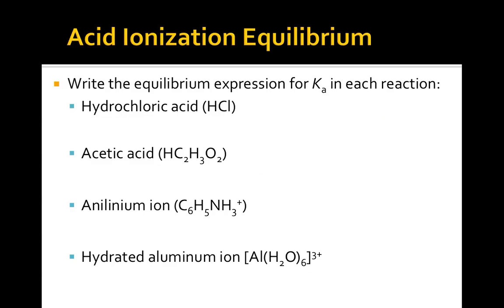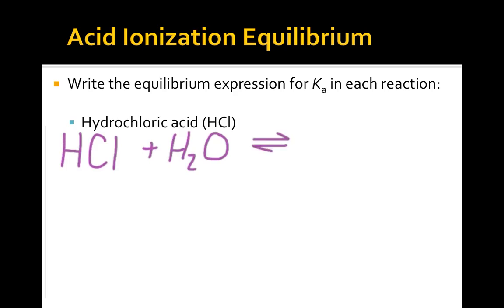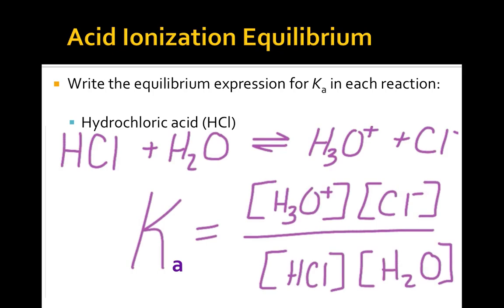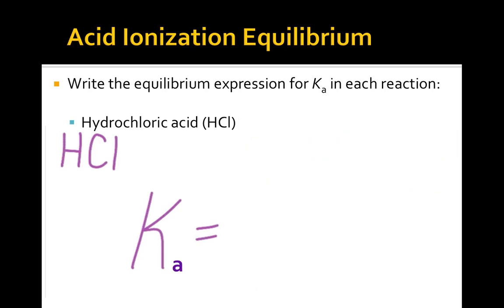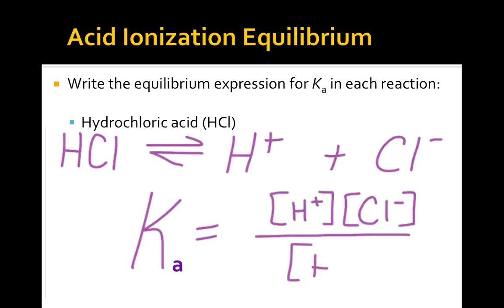Let's practice writing equilibrium expressions for the acid dissociation constant. We'll start with hydrochloric acid. The dissociation reaction between HCl and water produces both hydronium ion and chloride ion. The equilibrium expression is Ka equal to the concentrations of products over the concentrations of reactants, according to the law of mass action. Remember, water is a liquid in this reaction, so it's not part of the equilibrium expression. We can also write the dissociation reaction as simple ionization in which HCl forms H-plus and Cl-minus, with the equilibrium expression containing hydrogen ion instead of hydronium ion.